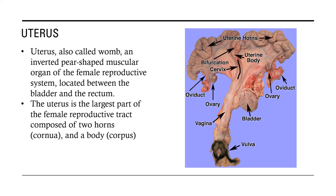Next is the uterus, also called the womb — an inverted pear-shaped muscular organ of the female reproductive system located between the bladder and the rectum. The uterus is the largest part of the female reproductive tract, composed of two horns and a body, also called the corpus. The uterine body is most developed in monotocous animals and is largest in the mare, less extensive in the cow, and small in the sow.